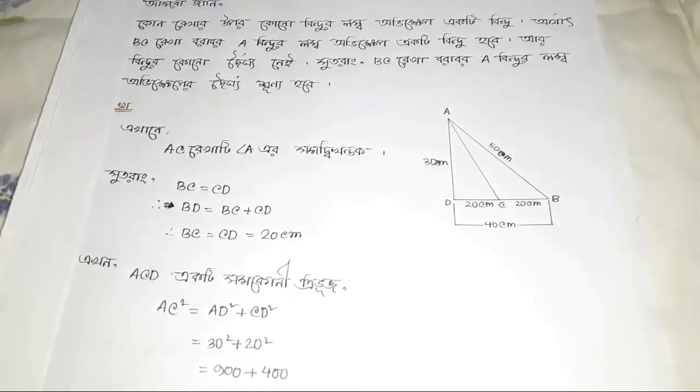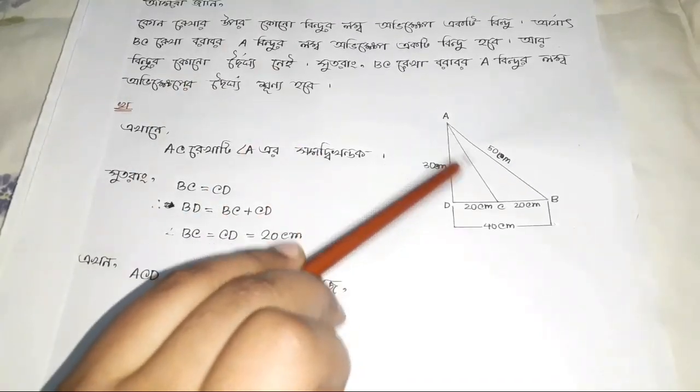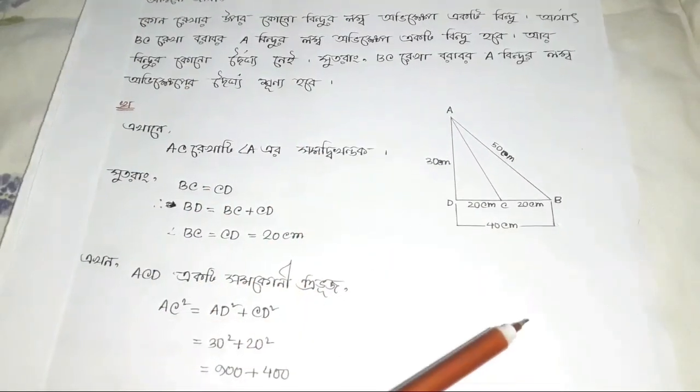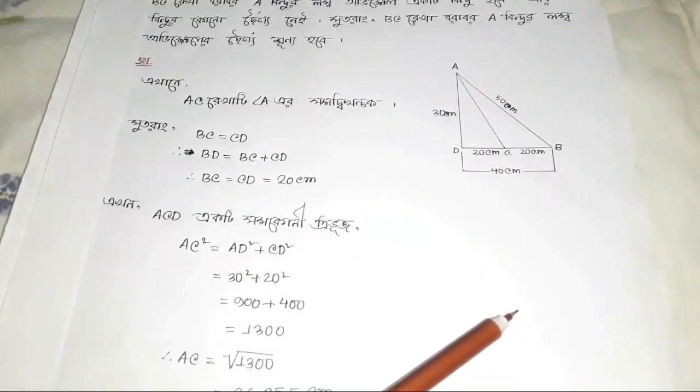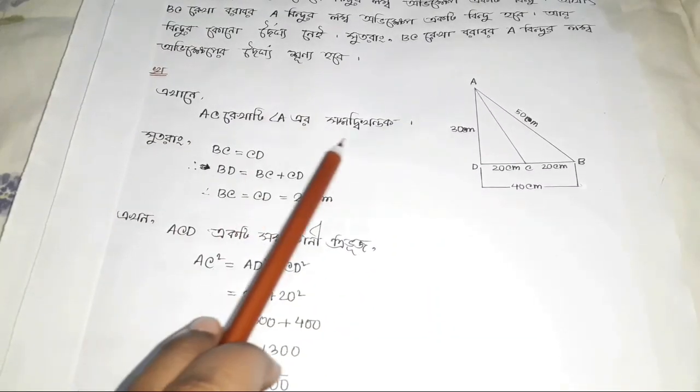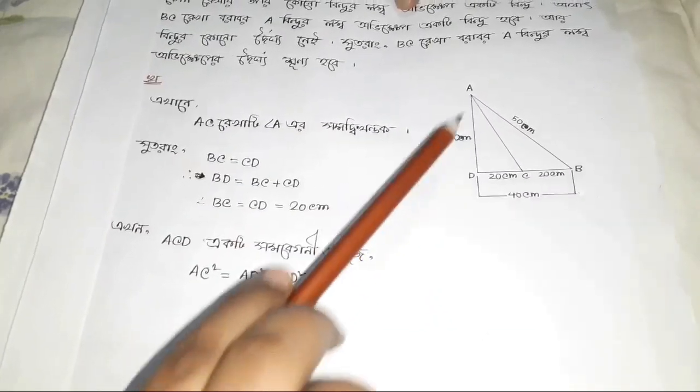Of AC, x times c is equal to 2t minus ac, c is equal to minus ac by 1, the same.